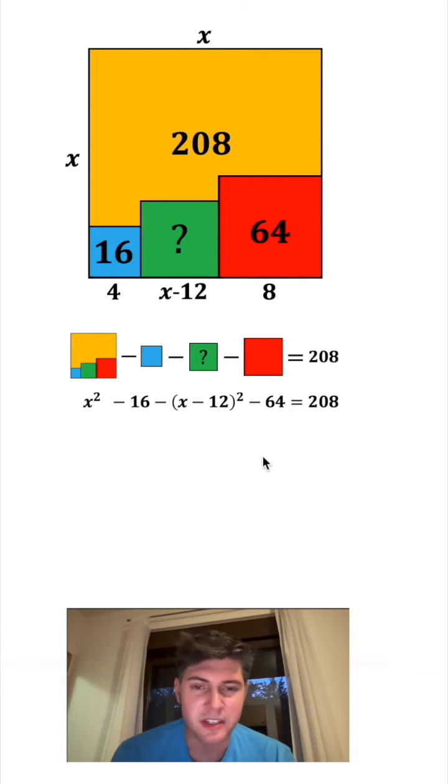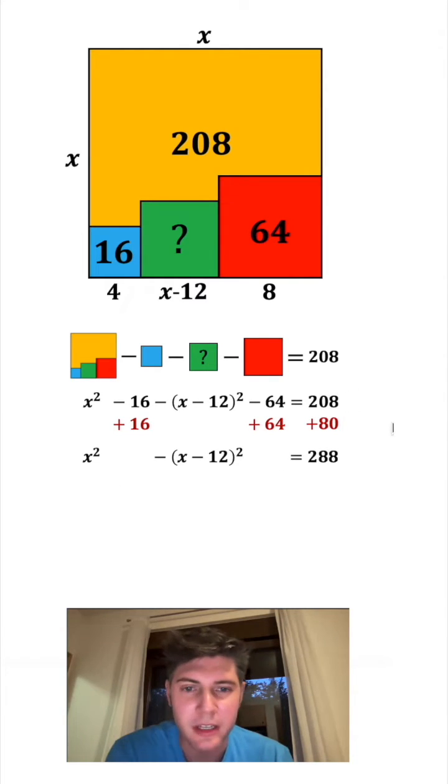To get rid of this minus 16, this minus 64, I'm gonna add 16 and add 64 on the left side. And to counterbalance that, I'm gonna add 80 on the right-hand side. This left-hand side, all these cancel, leaving us with just this, and on the right-hand side, 208 plus 80 equals 288.